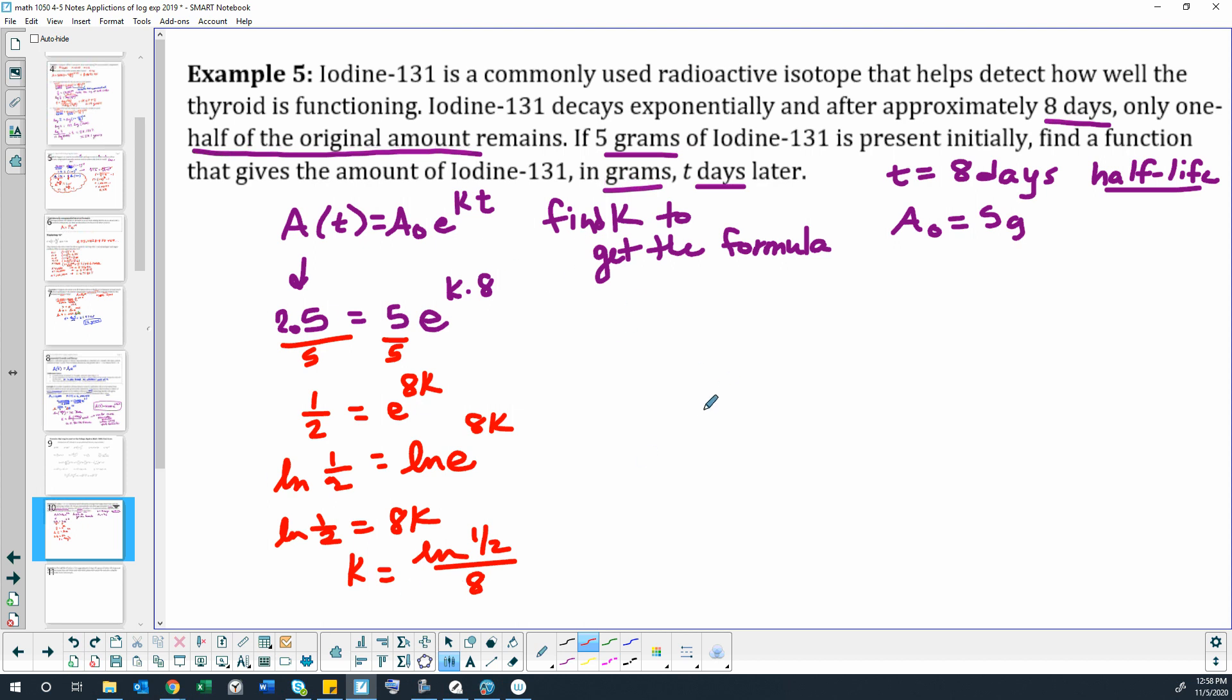We have what we need for the formula we're trying to write, so A is a function of t, for an initial amount of five grams, e to the kt. If we want to leave this as exact we would do natural log 0.5 divided by eight times t.